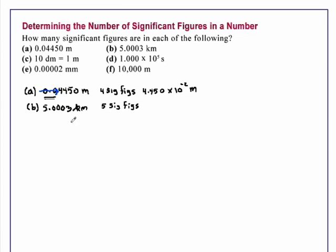Example C, 10 decimeters is equal to 1 meter. This is an example of what is called a defined quantity. And any quantity that is defined has an unlimited number of significant figures.